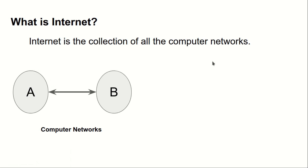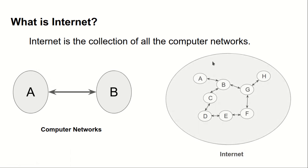Now let's move to the internet. As you can see, there are a bunch of computers connected together. A is connected with B, B is connected with G, B is also connected with C, C is connected with D, D with E, E with F, F with G, G with B, and B is also connected with H. These are the computers connected together and their collection is called the internet.